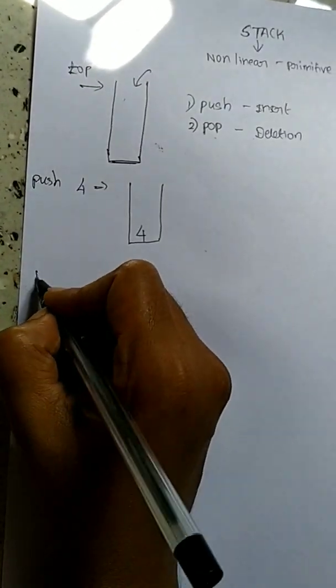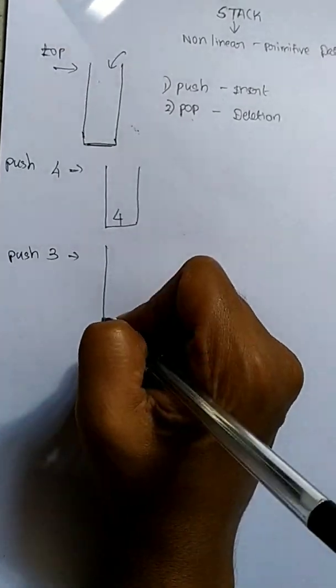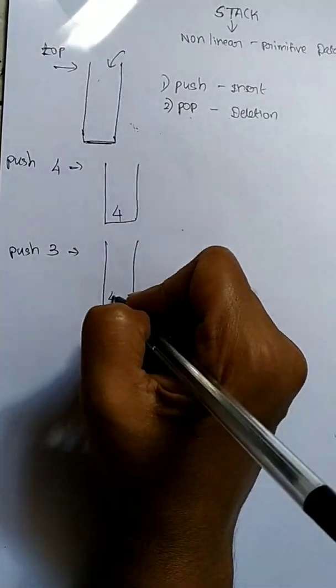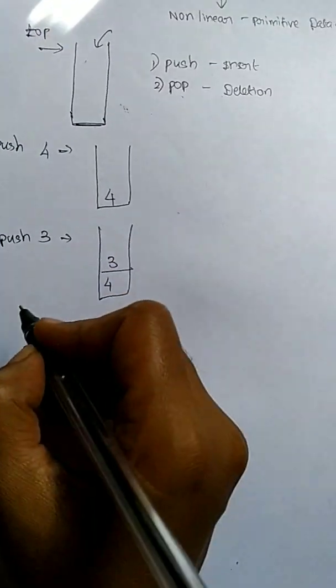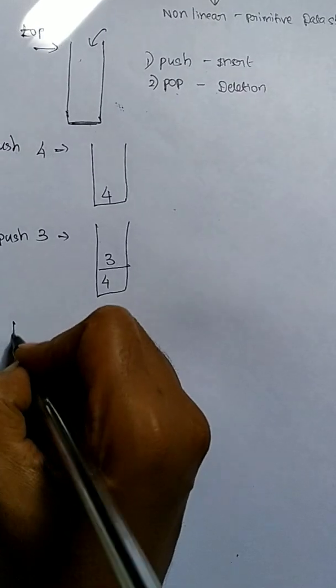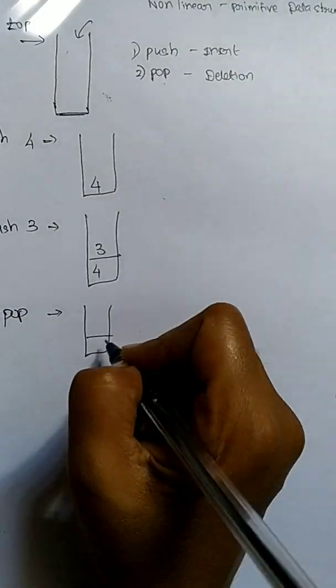If I insert another element 3 into my stack, it will be inserted on top as 3. Now, if I want to pop an element, the first element popped will be 3. The element which is pushed in at the last is popped out first.